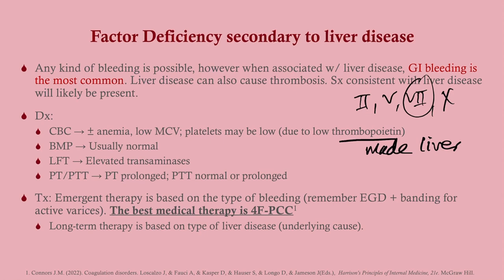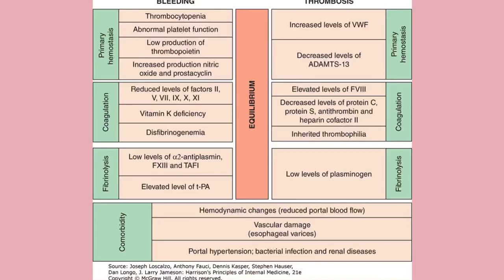Treatment depends on the type of bleeding. For variceal bleeding, address that first with EGD and banding. However, the best medical therapy is 4F-PCC — four-factor prothrombin complex concentrate — commit that to memory. Long-term therapy is based on the type of liver disease; often this is non-reversible because it's associated with cirrhosis, and a liver transplant may be needed.